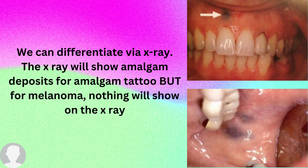On X-ray, the amalgam tattoo will show amalgam deposits — you will see radio-opacity representing those deposits. For melanoma, however, nothing will show on the X-ray.